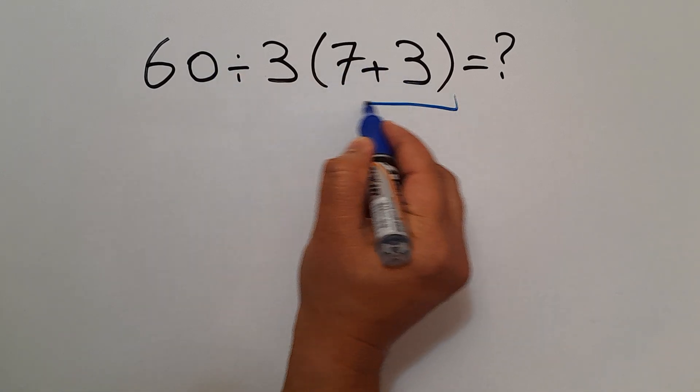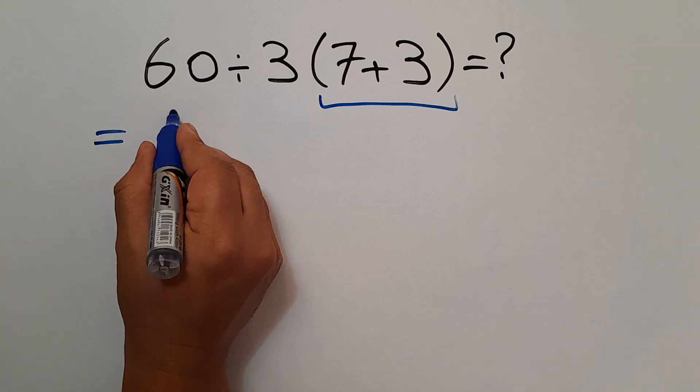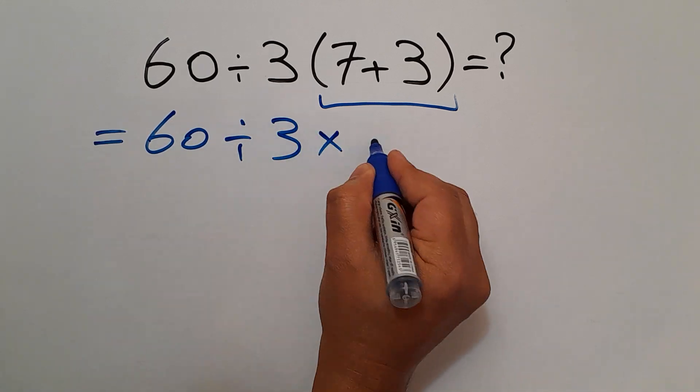7 plus 3 gives us 10. So we have 60 divided by 3 then times 10.